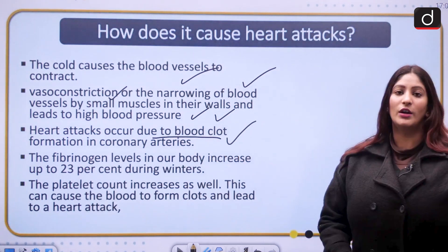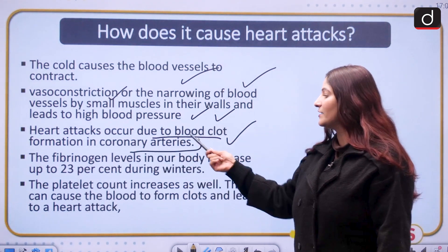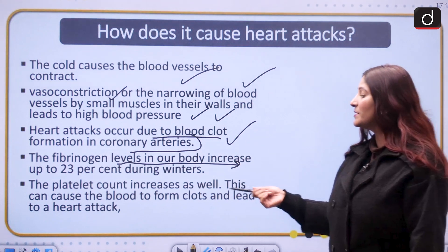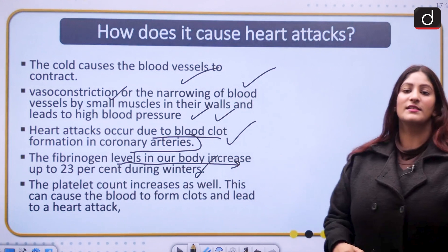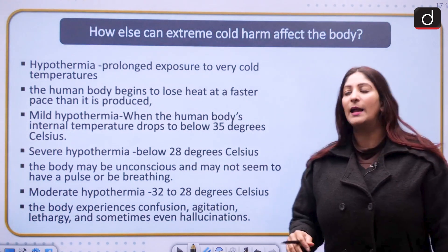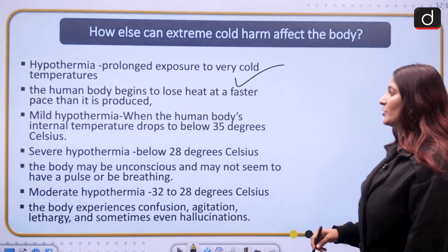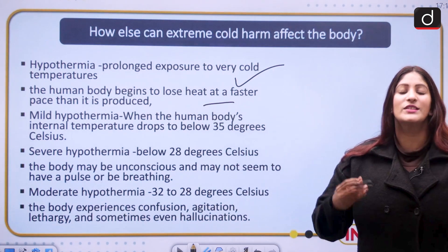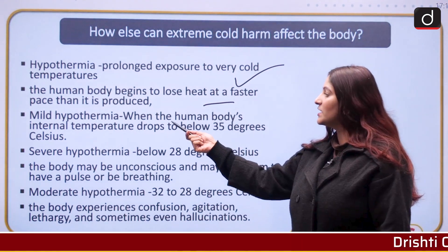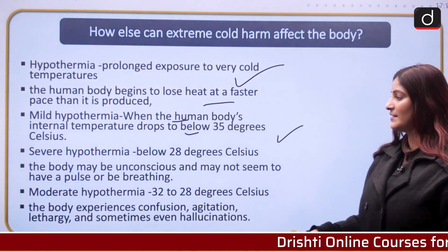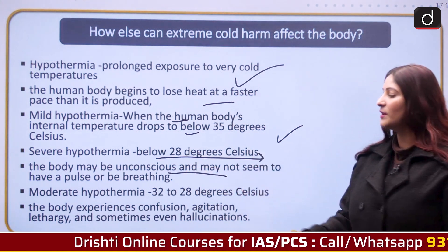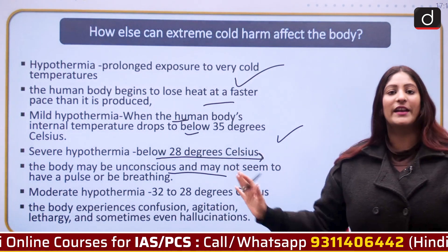Blood clots form because cold increases fibrinogen levels in the body — up to 23 percent during winter. The platelet count also increases, resulting in blood clotting and potentially heart attack. Hypothermia occurs due to prolonged exposure to very cold temperatures, when the body loses heat faster than it can generate it. Mild hypothermia is when the body's internal temperature drops below 35 degrees Celsius, and severe hypothermia is when it drops below 28 degrees Celsius, at which point the body may be unconscious with no pulse — dangerously close to death.